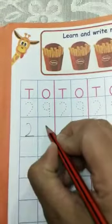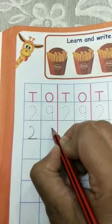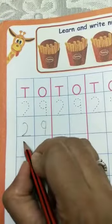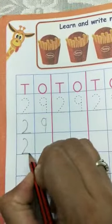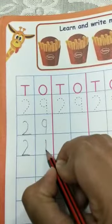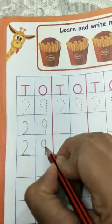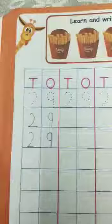We will write 2 with a little bit of curve here, and then 9, a standing line and then a half circle. This way we will write 29 on page number 74.